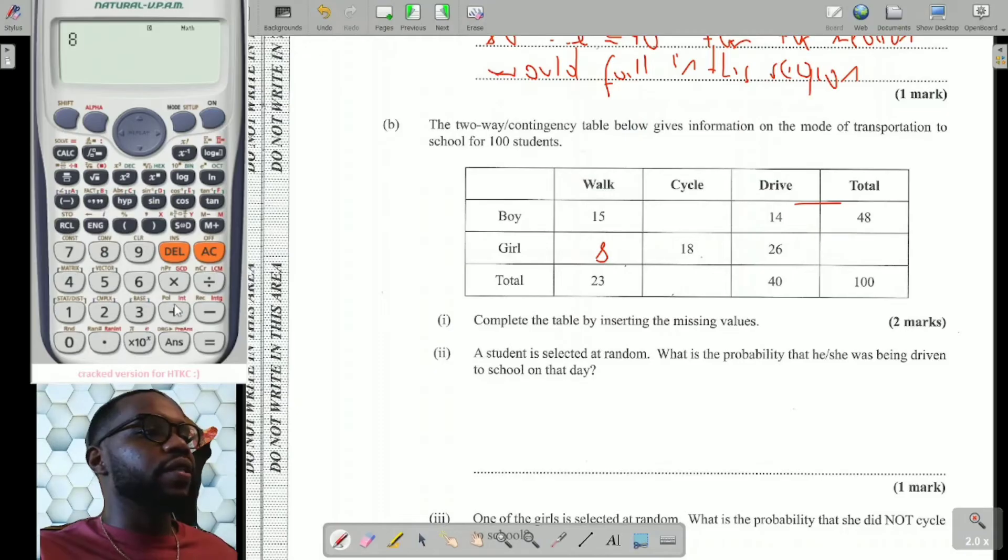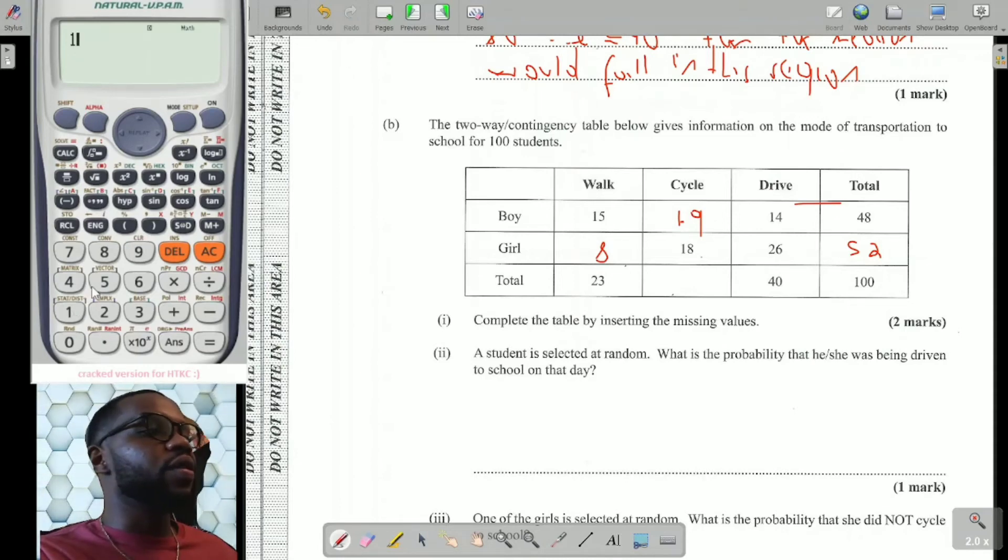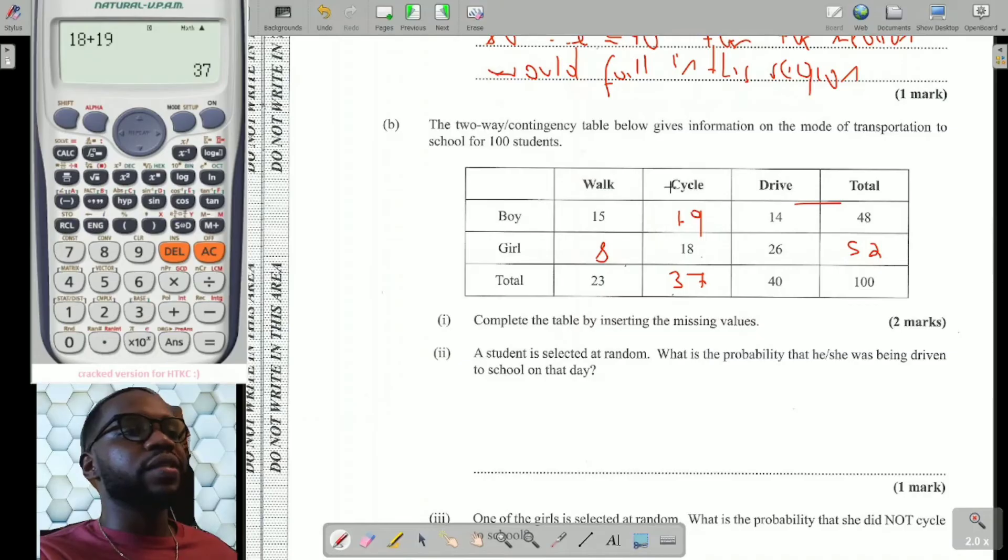Now, let's go all the way up across to the total. We know that 8 girls walk, 18 girls cycle, and 26 girls drive. So if I want the total, I just simply need to add all of those. 8 plus 18 plus 26 equals 52. Now, I know that 15 plus whatever cycles for boys plus whoever drives is equal to 48. So I just need to take 48 and subtract the sum of the other two, which is 15 and 14. That's 19. And the column total for cycle is 18 plus 19, which equals 37.